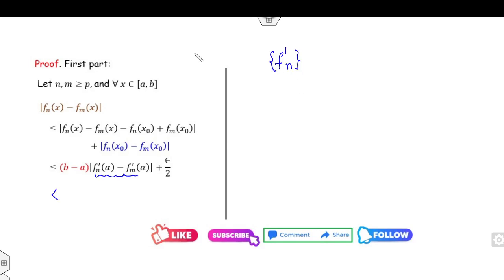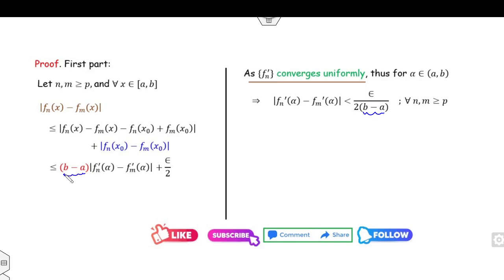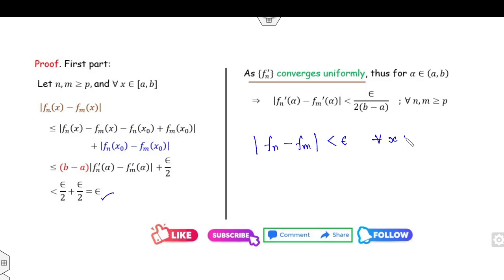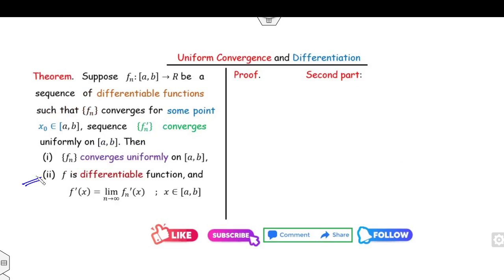Since fn' converges uniformly, there exists N such that |fn'(α) − fm'(α)| < ε/(2(b−a)), so (b−a) cancels and we get ε/2. Adding the two parts gives |fn(x) − fm(x)| < ε for all x in [a,b]. By the Cauchy criterion, the sequence fn converges uniformly. That completes Part 1.